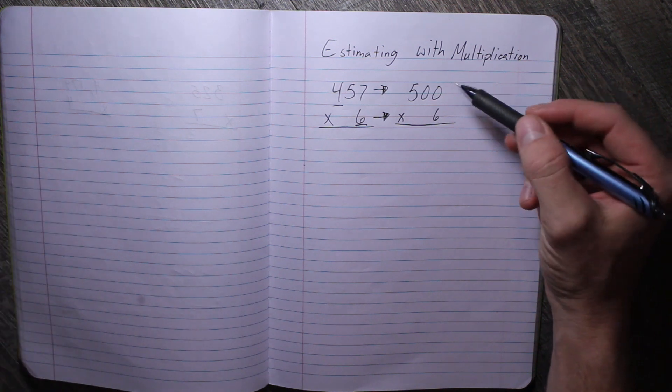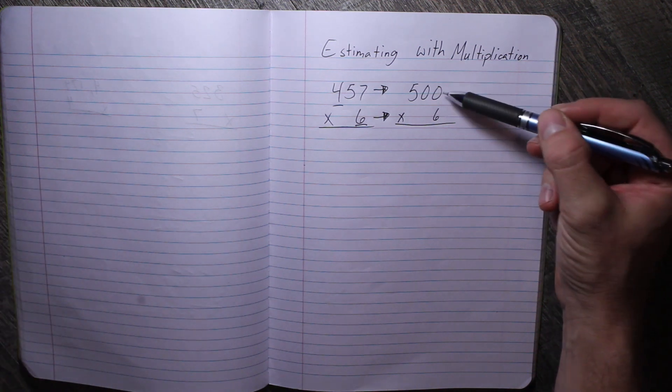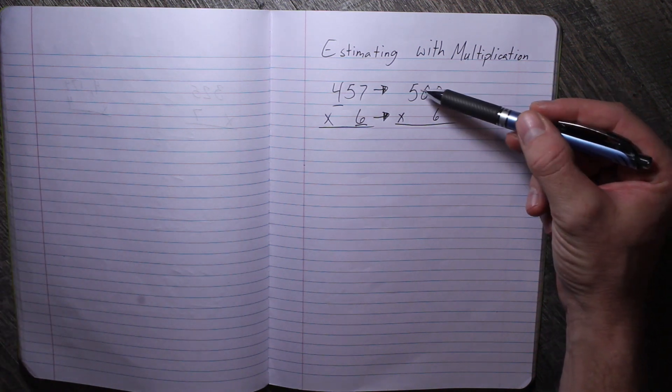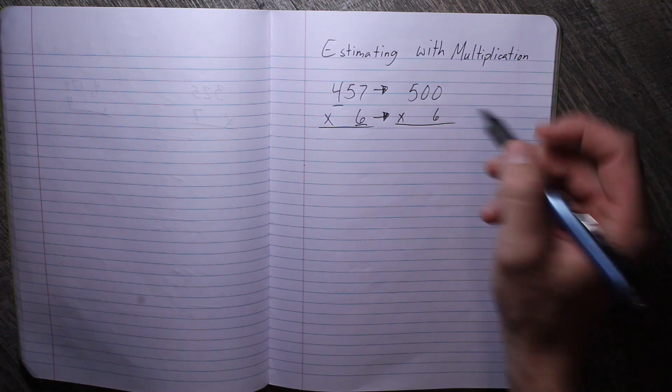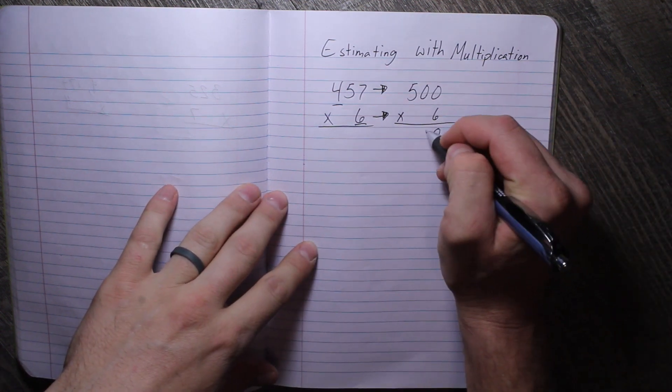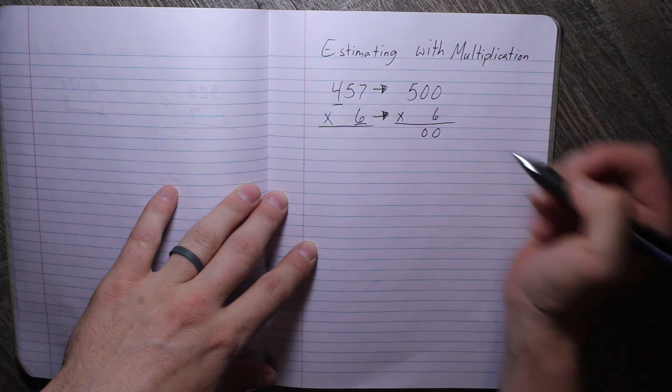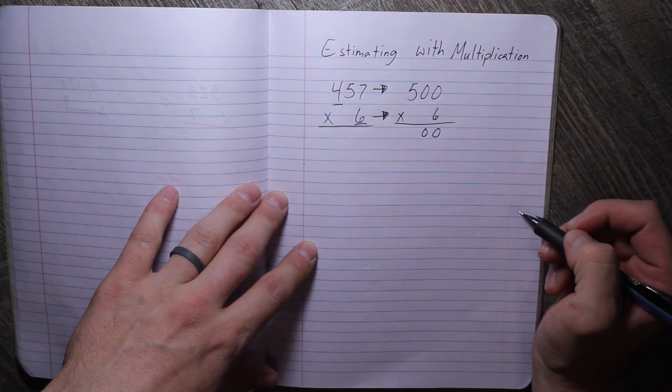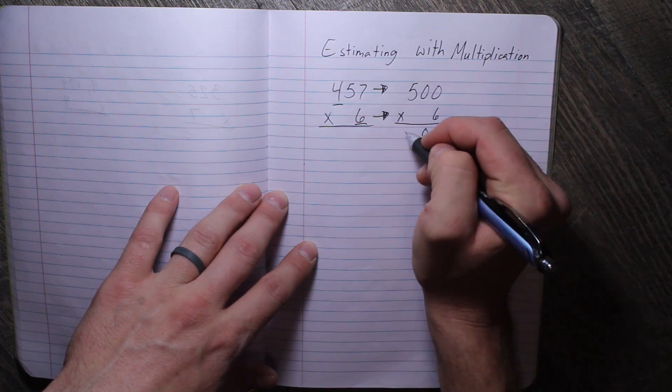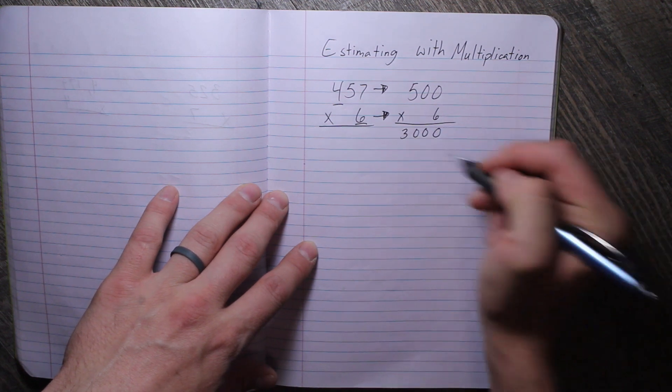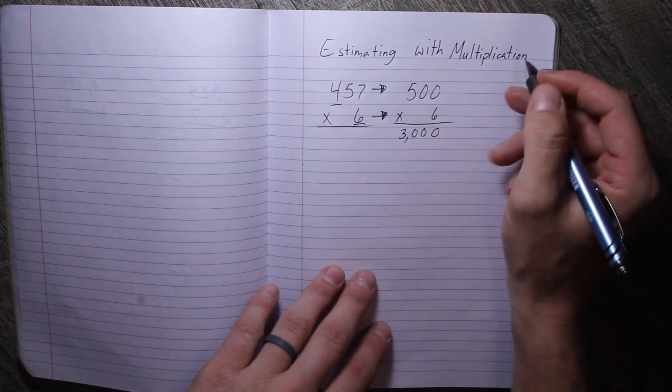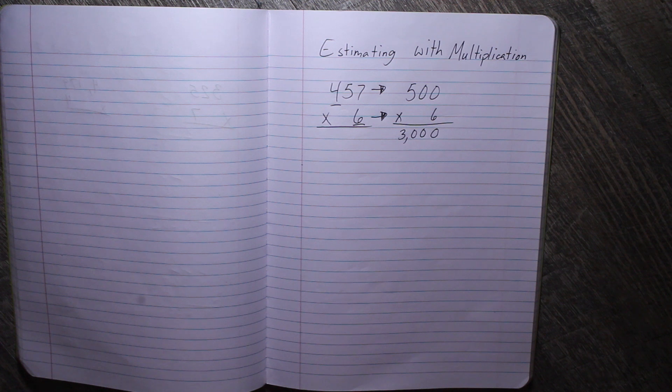Now the way this works, remember, if we have two zeros in our factors, our answer is going to start in the hundreds place. So we're going to have two zeros in our product. And 5 times 6 is 30. So our answer is about 3000.